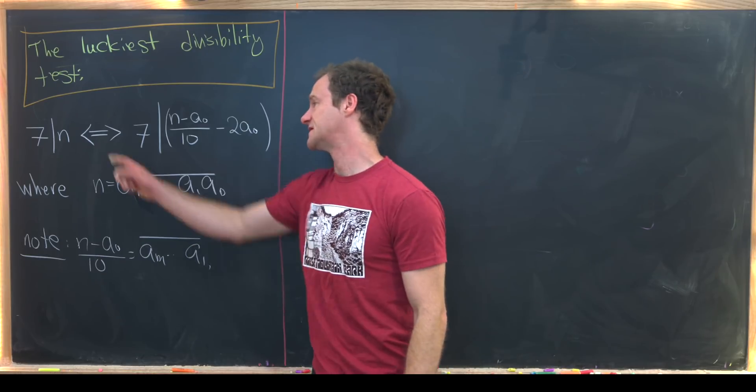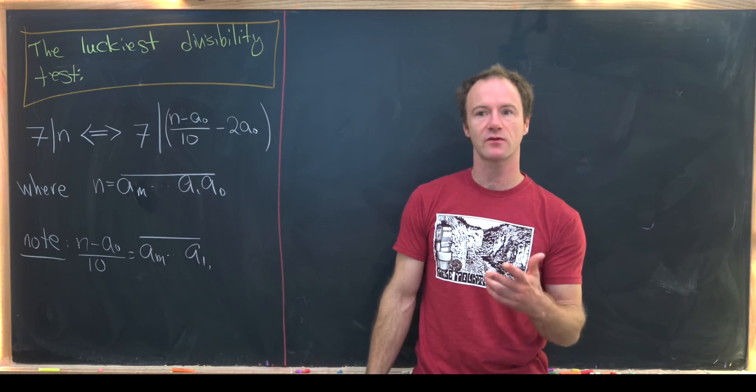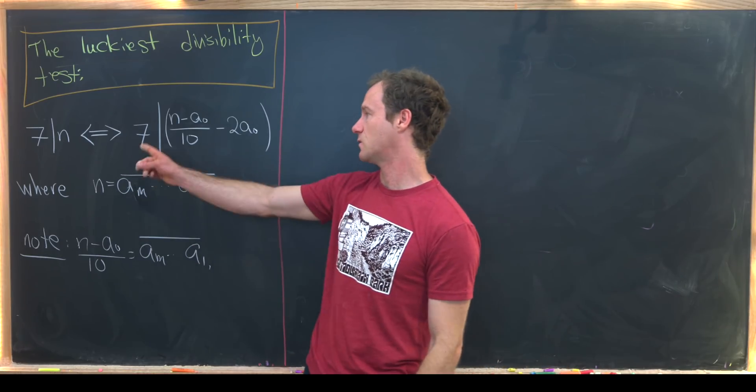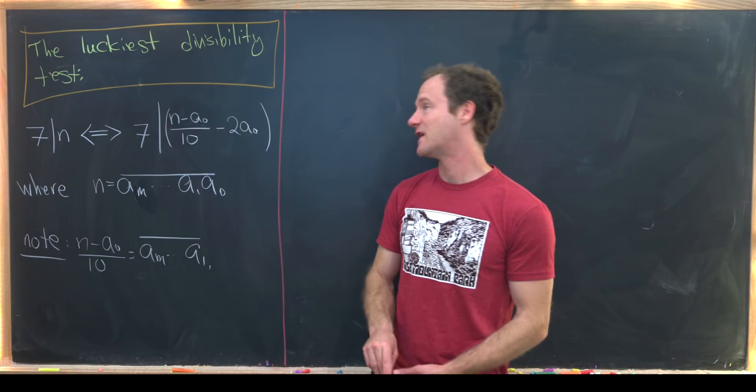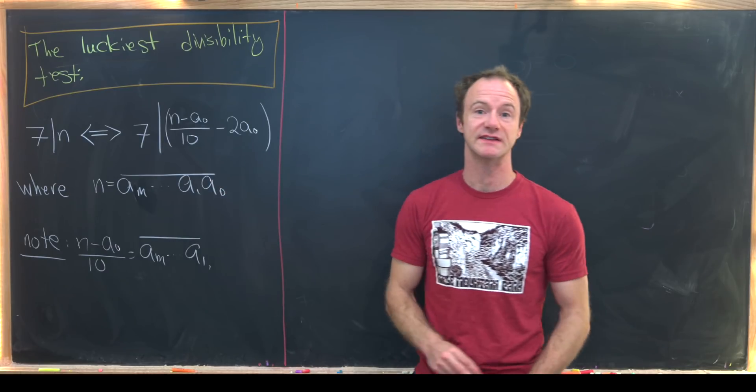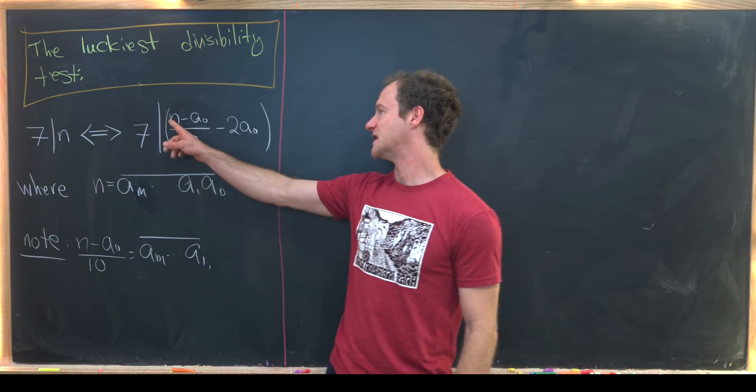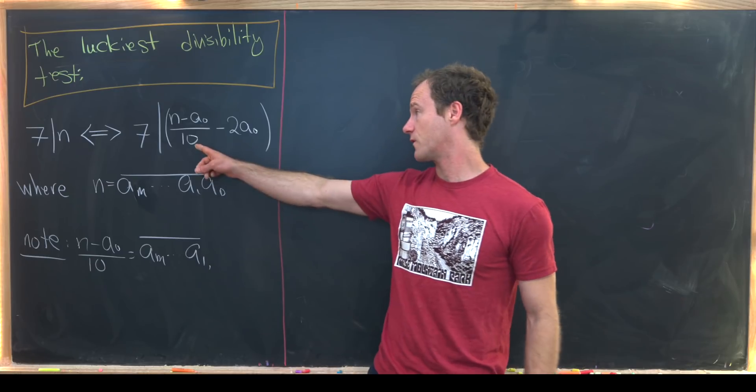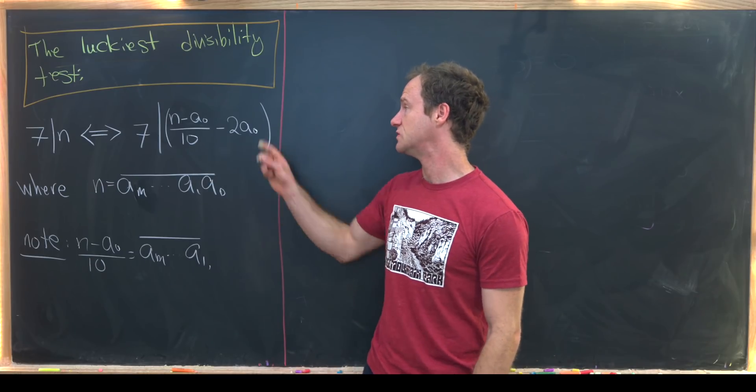So the rule goes like this. Seven divides n, in other words n is a multiple of seven, if and only if seven divides into this new kind of crazy looking object which is n minus a naught over 10 minus two times a naught.